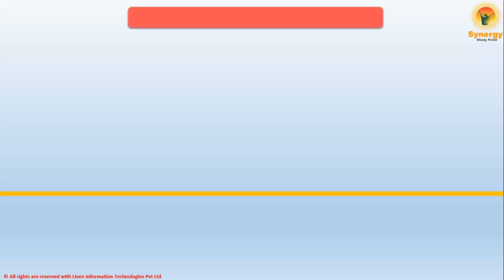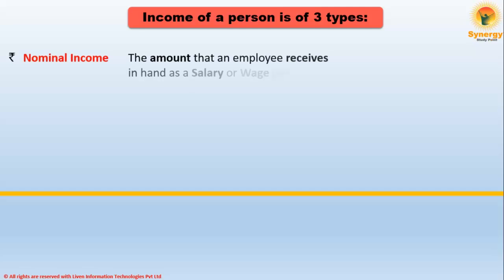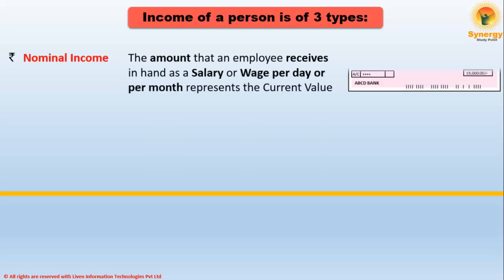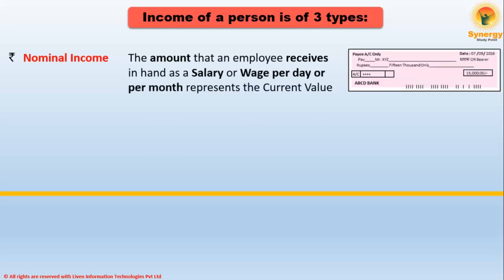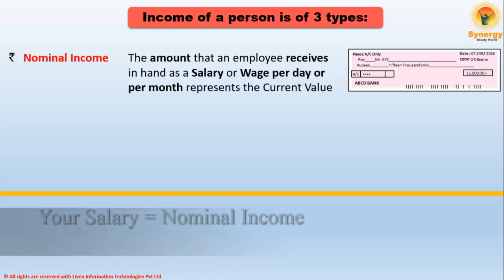The income of a person is of three types. First, we look at nominal income — the amount that an employee receives as a salary or a wage. It can be per day or per month and represents the current value or present value of your income. In simple terms, the salary that you are getting today is your nominal income.